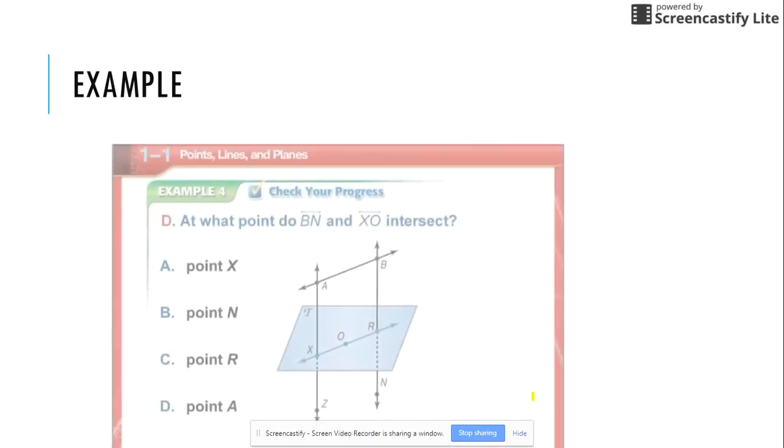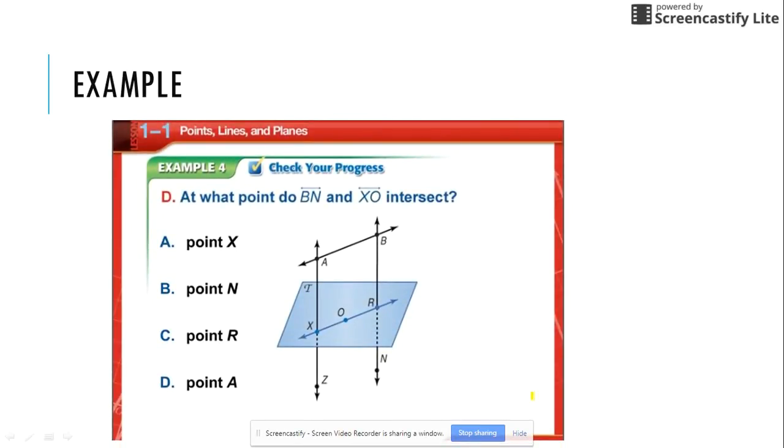Here is our final example. At what point do BN and XO intersect? The first thing you want to do is trace BN. So here is point B and here is point N. So here is line BN. And I'm tracing it so that I can visually find it. XO is right here. And even though it says XO, it is the entire line so you keep connecting. And as you can see, the point where they intersect is right here, which is point R, which is letter C is my final answer.